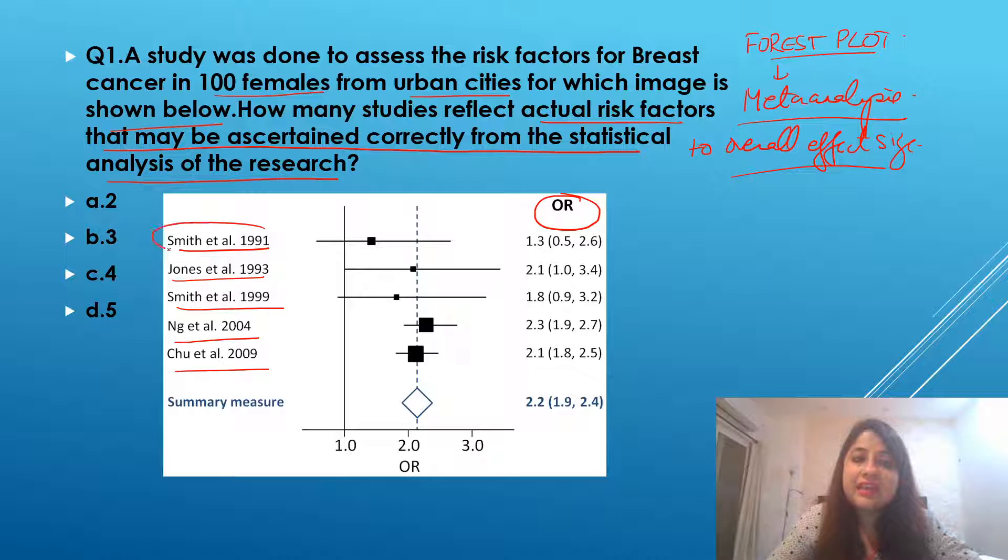Now, suppose this study, Smith et al., talks about risk factor 1, which could be age. Johns et al. talks about risk factor 2, which could be say socioeconomic status. Smith et al. talks about risk factor 3, which could be about diet or nutrition habits.